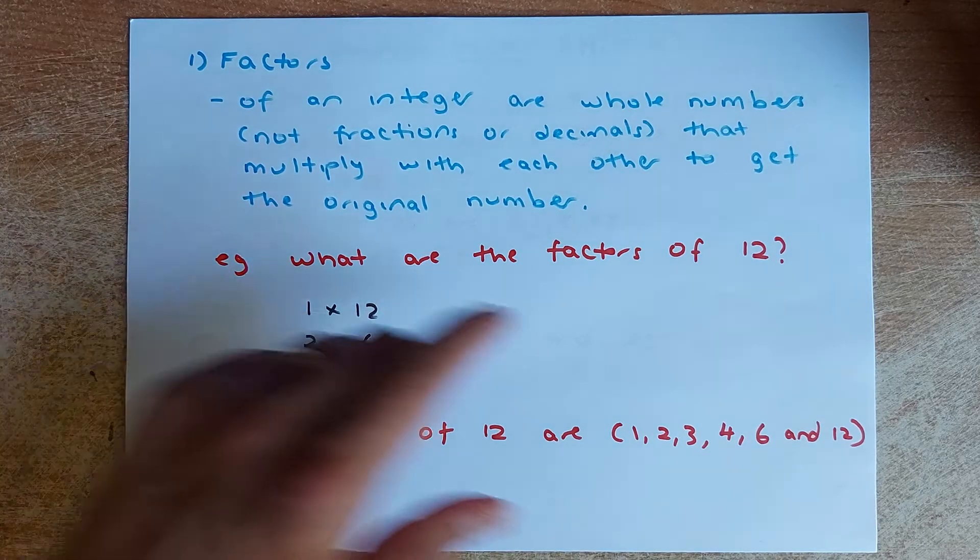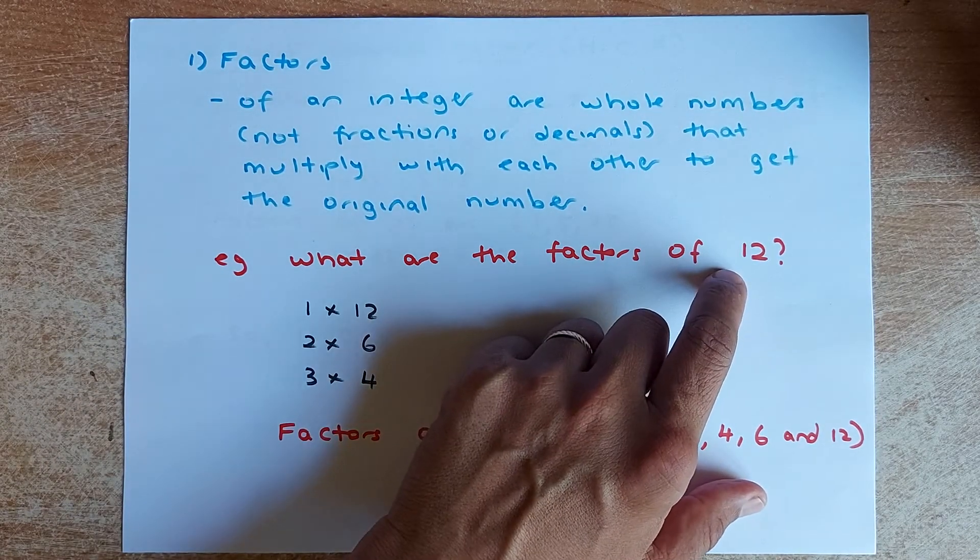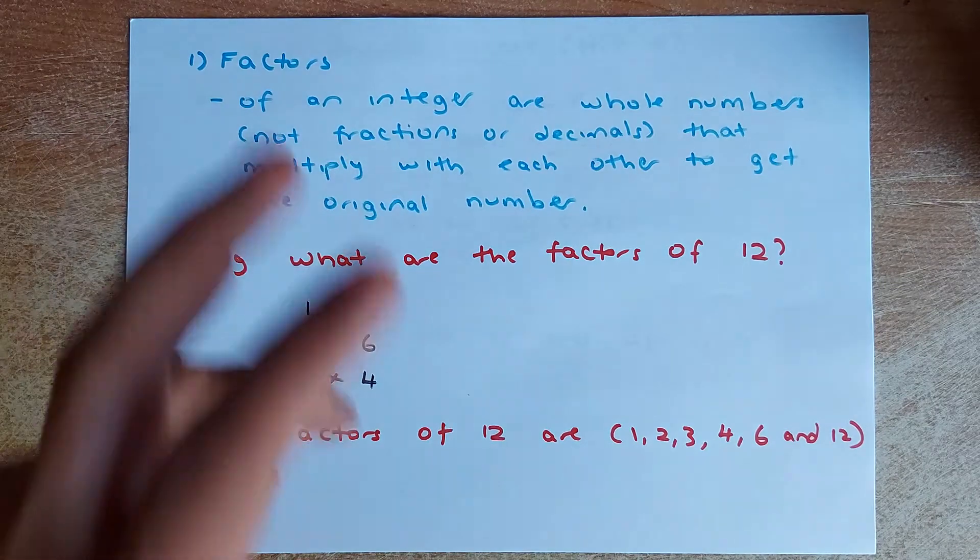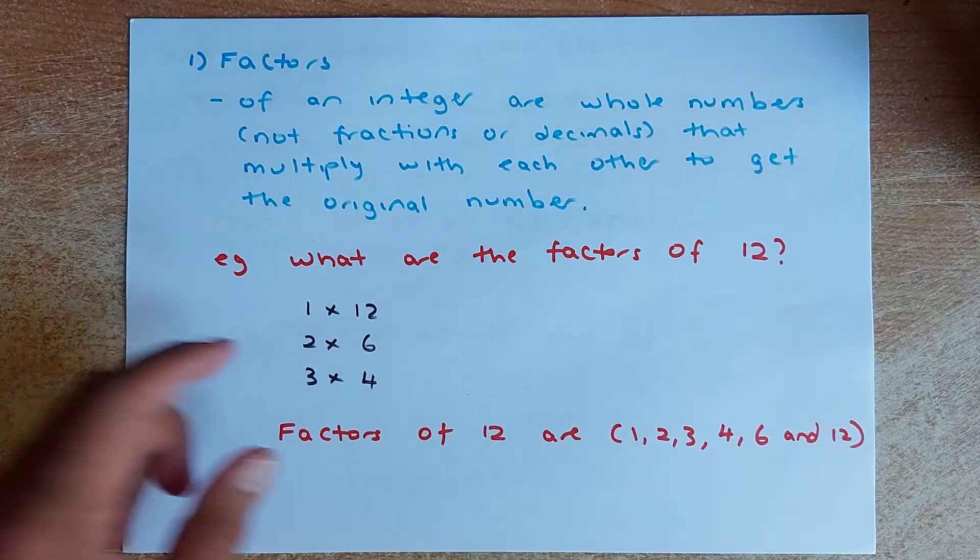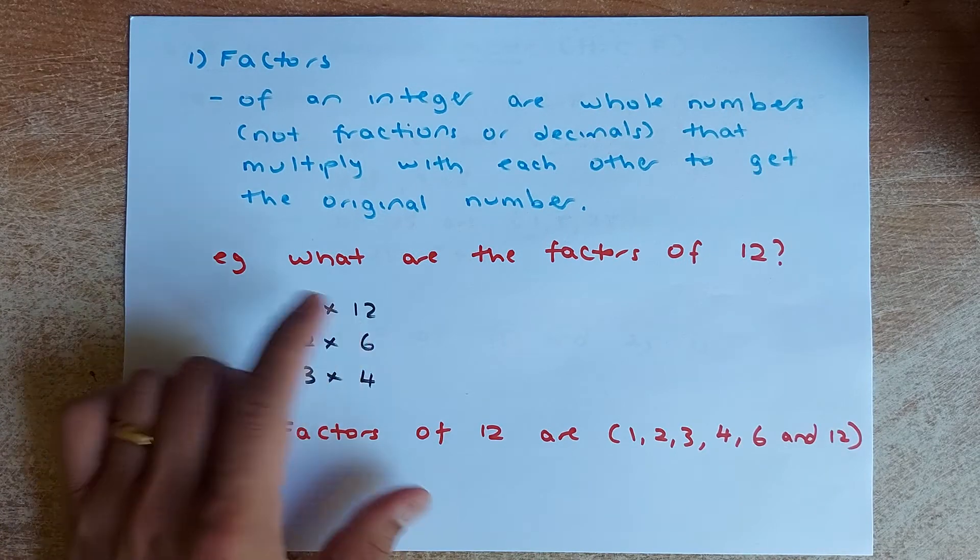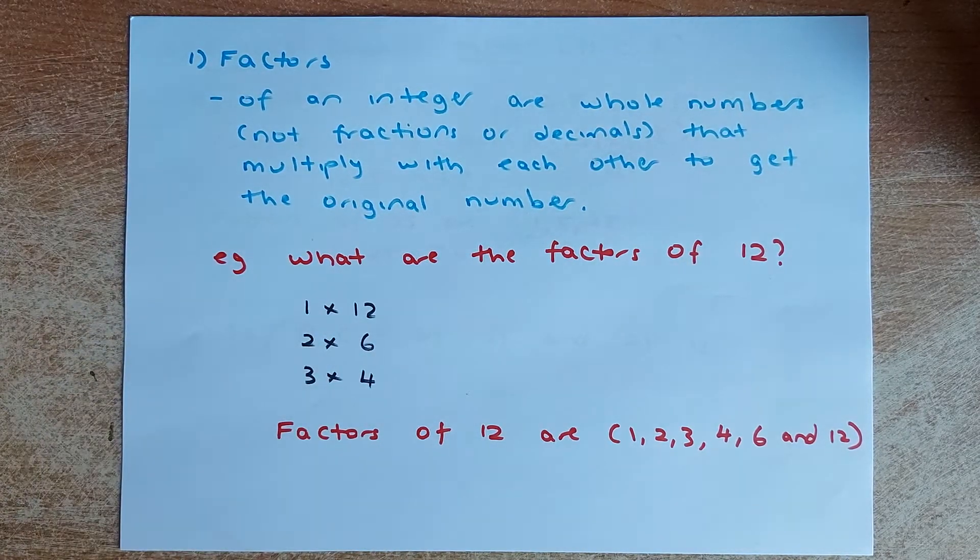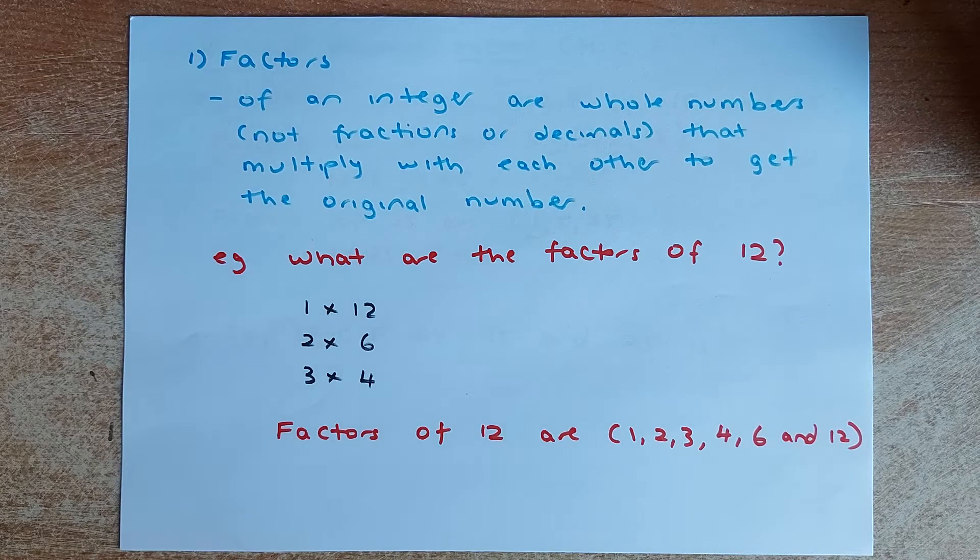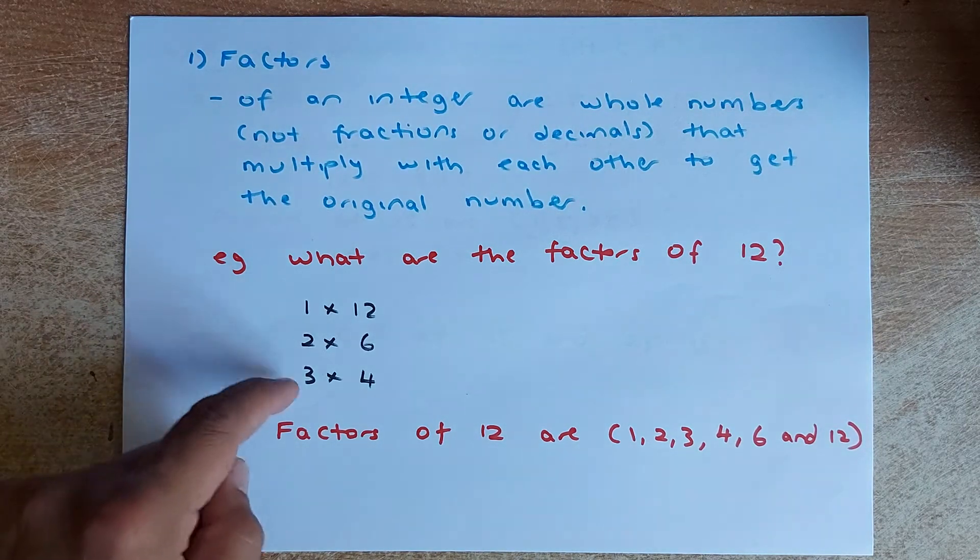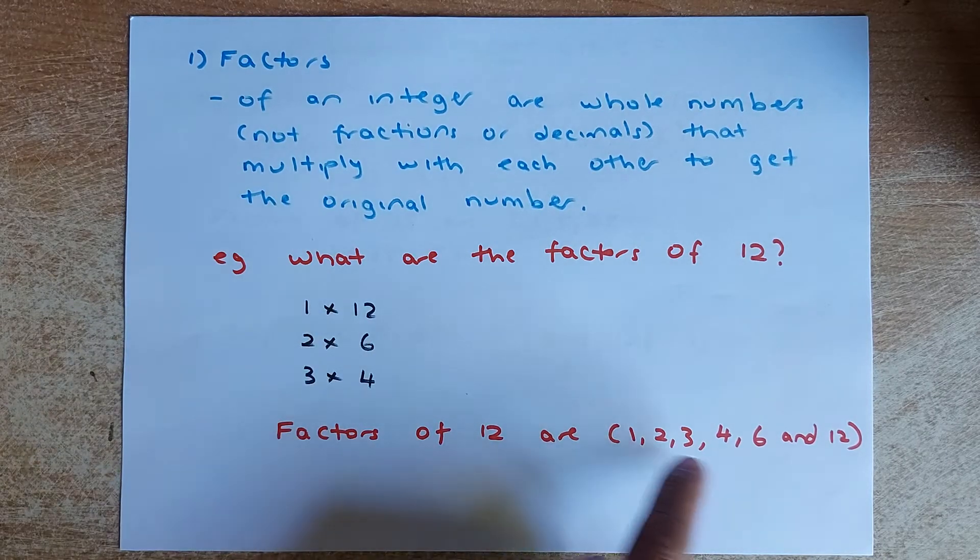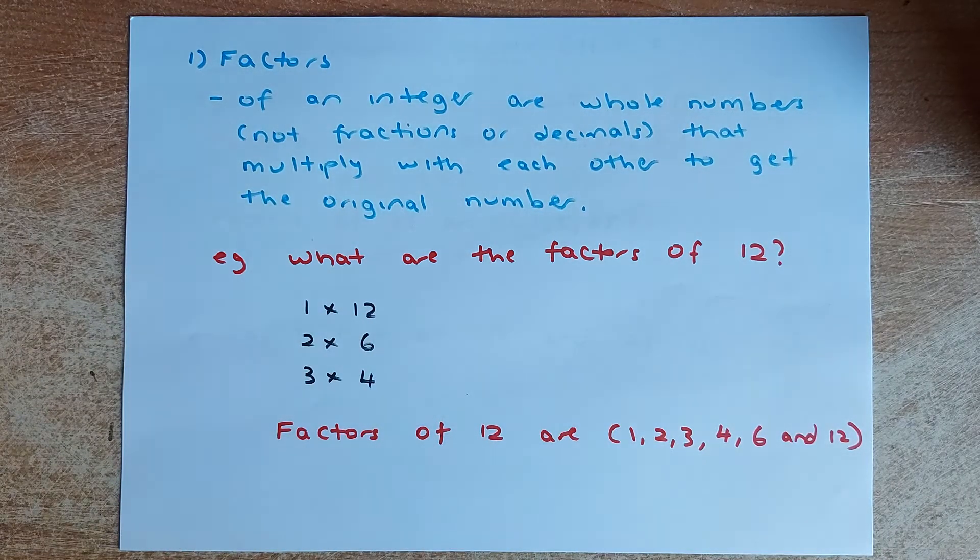So for example, if the question asks you what are the factors of 12, you need to multiply two integers or two whole numbers so that they will give you a total of 12. So there are three possibilities: 1 times 12, 2 times 6, and 3 times 4. So the factors of 12 is just all the numbers: 1, 2, 3, 4, 6, 12, and you write them in the bracket.